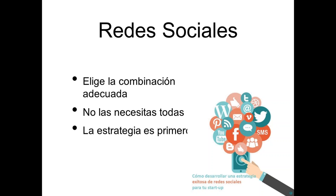Si tu audiencia es joven, si son adolescentes de 13 años, esa audiencia meta no está en Facebook — Facebook tiene una audiencia de mayor edad. Ellos están en Snapchat. Pero los mensajes en Snapchat son muy inmediatos: se publican unos segundos y desaparecen. Si quieres que tus mensajes permanezcan y tienes una audiencia joven, podrías usar Twitter o Instagram si tu proyecto te permite tener mucho contenido visual. No necesitas todas las redes sociales y, sobre todo, recuerda que la estrategia es primero.